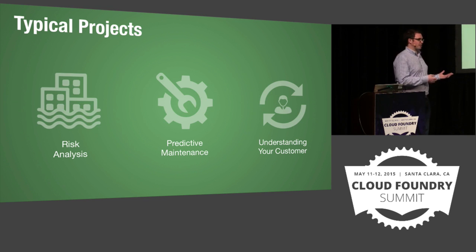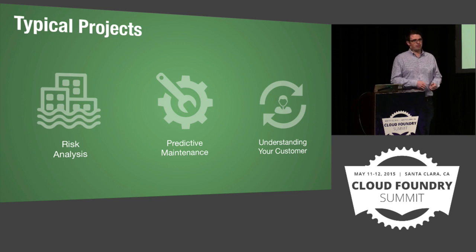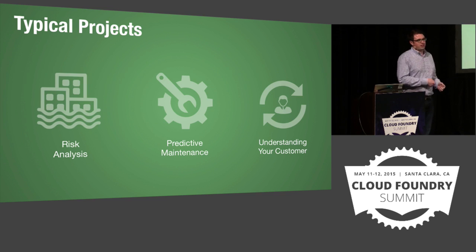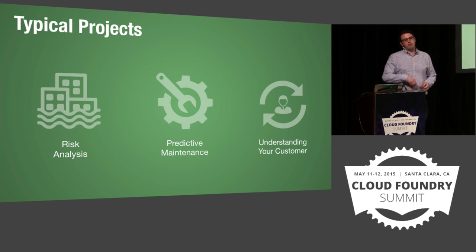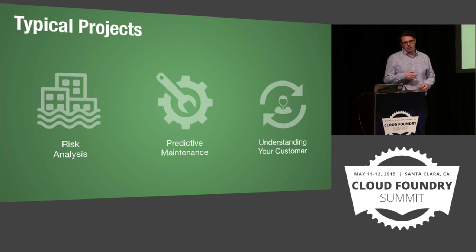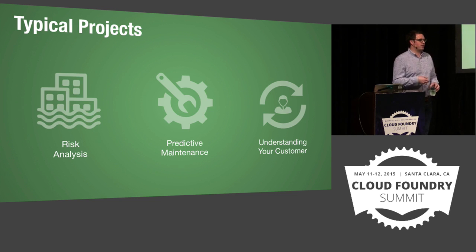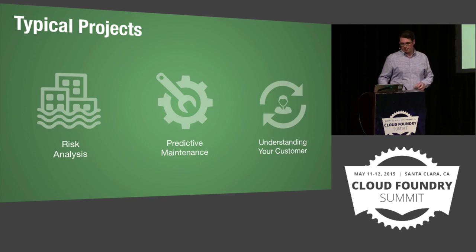The third example is understanding your customer. Lots of enterprises have siloed data where they understand a little bit about their customer in one place and another bit elsewhere, but these never talk to each other. Trying to bring those together, understanding your customer from a holistic point of view, and then providing better services and better customer experience. We also do things like reducing fraud in banking or predicting the destination of a journey in a car — and we want to deliver all these data science services quickly and easily.